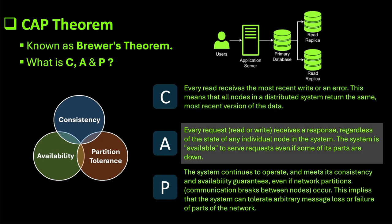Next is Availability. It means that every request — read or write — made to the system receives a response, even if it is not the most recent write. The system is available for read and write operations regardless of the state of individual nodes. In simpler words, the system guarantees that it will always respond to a client's request. This response could be the latest consistent state or an older, potentially stale version, but the system does not fail or become unresponsive. To maintain availability, distributed systems often replicate data across multiple nodes, so even if some nodes are down or unreachable, others can still serve requests.